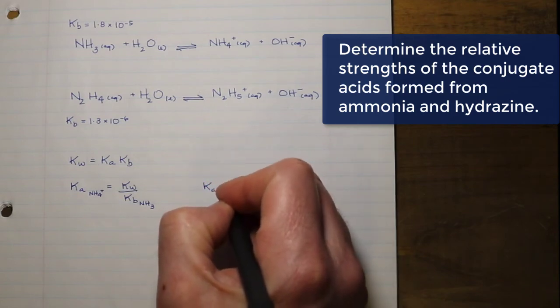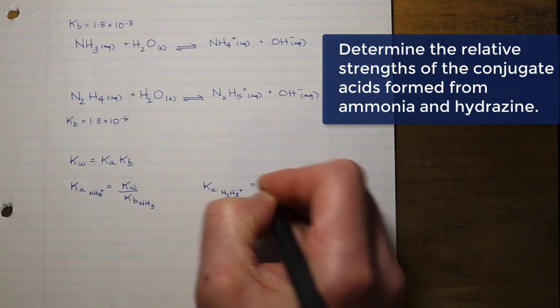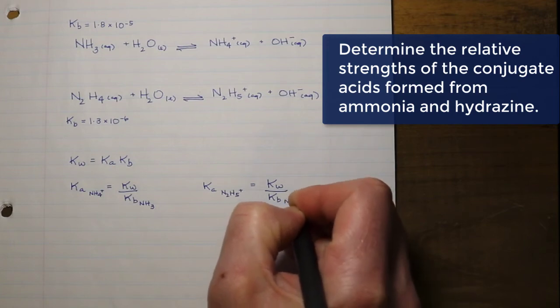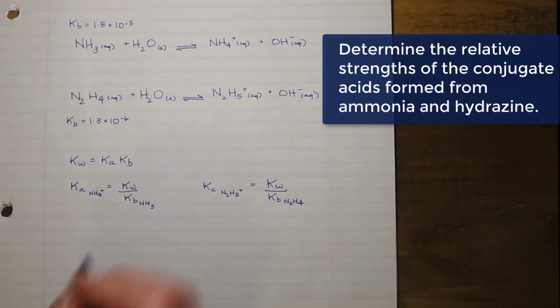We're then going to compare it to the Ka of the N2H5 plus ion, and we are going to use the KB of the hydrazine in order to do that. So to further our calculations, we're going to take the Kw and divide by the respective KB's of both bases.